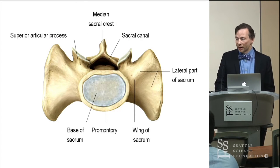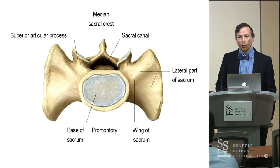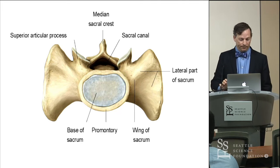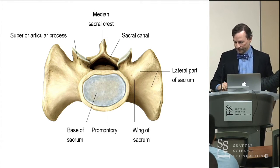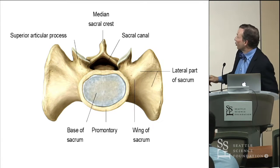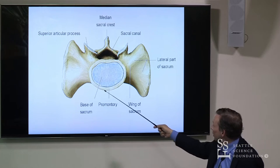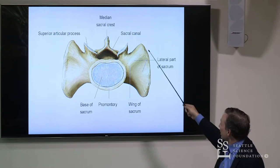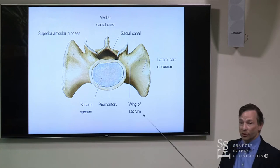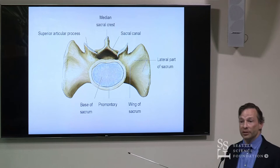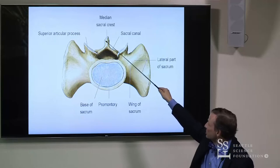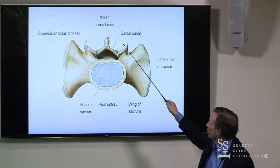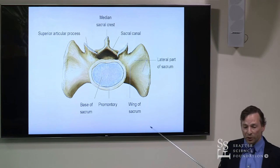This is a bird's eye view showing the forward projection — the sacral promontory — and then our huge lateral extensions, the ala, which are wonderful for getting screws in and holding onto a good purchase of bone. We see our median sacral crest and our posterior-facing superior articular facets.